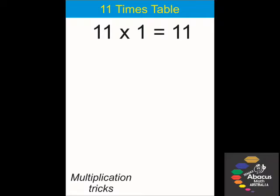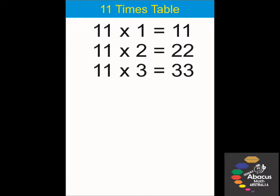11 times 1, we double the 1, so it will become 11. 11 times 2, we double the 2, it becomes 22. 11 times 3, we double the 3, it becomes 33.